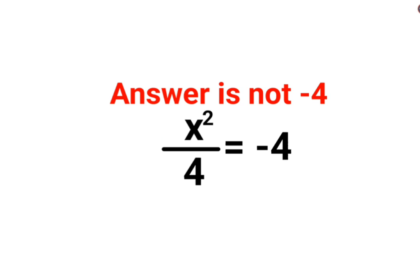So here when you have x² / 4 = -4, in order to find the value of x, we will multiply both sides by 4. So everything gets shifted on the other side. So we have x² = -16.